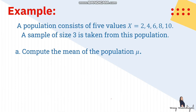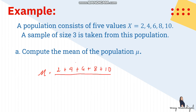Now let's solve an example. A population consists of five values: 2, 4, 6, 8, and 10. A sample size of 3 is taken. First, let's compute the mean of the population: 2 + 4 + 6 + 8 + 10, divided by 5 — therefore the mean is 6.